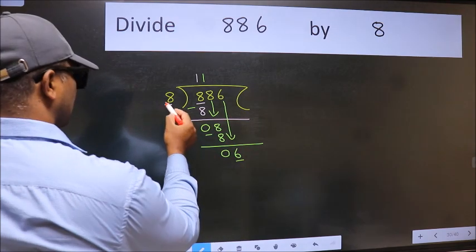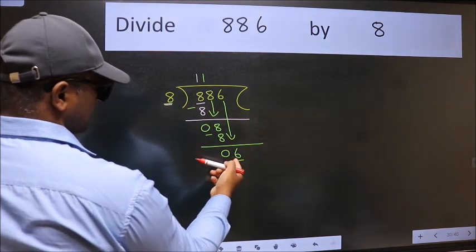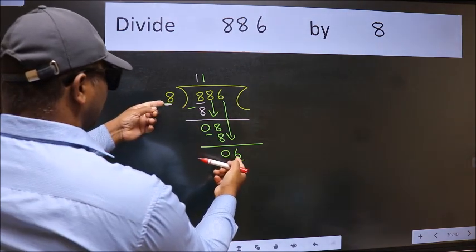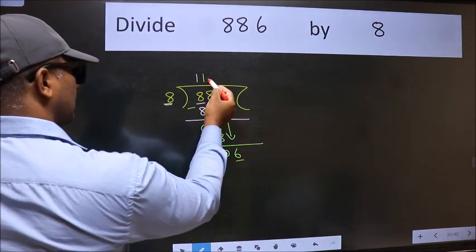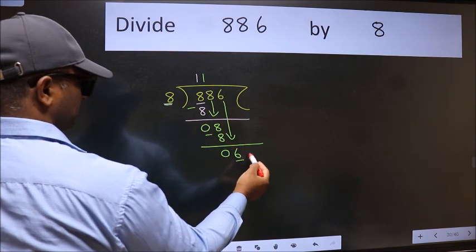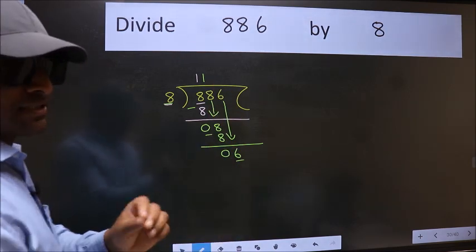Here we have 6 and here 8. 6 is smaller than 8. So what many do is they directly put dot take 0, which is wrong.